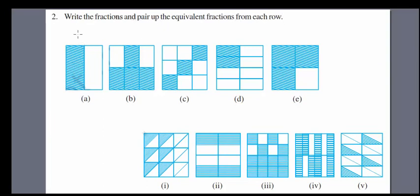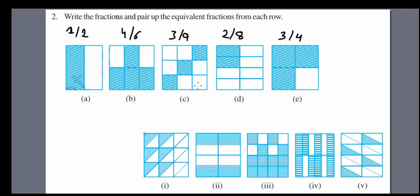Second question: write the fractions and pair up the equivalent fractions from each row. We have 1/2, 4/6, 3/9, 2/8, 3/4, and others. You have to check the shaded portions and simplify by dividing. We multiply in the numerator and denominator to find equivalent forms — for example, 4 over 8 and 12 over 4, giving us 16.